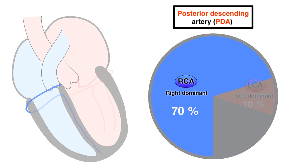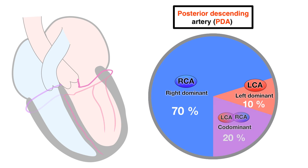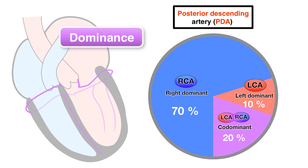In about 10% of the population, the PDA arises from the left circumflex and is deemed left dominant. In the remaining 20%, it may be co-dominant. What's important to remember is that it is the PDA that determines the dominance of the coronary circulation.